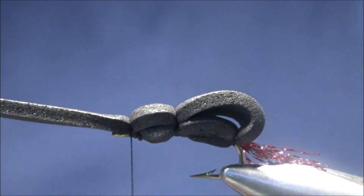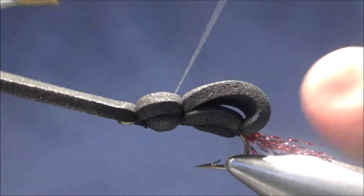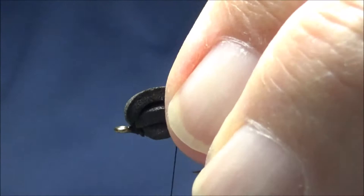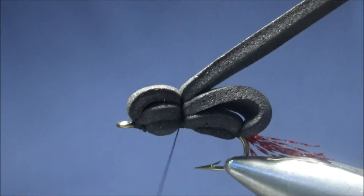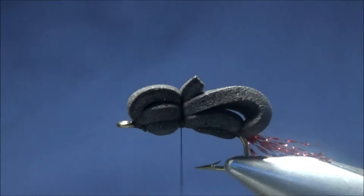Once again underneath the shank and over the one-third point. Bring our foam back and lash it down. I'm going to clip off the foam.